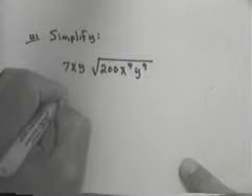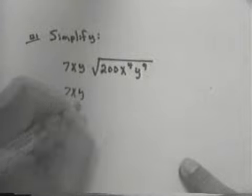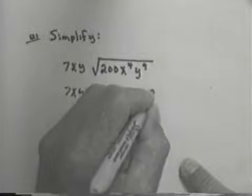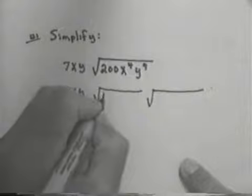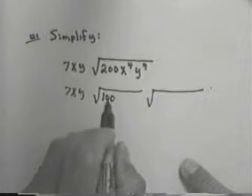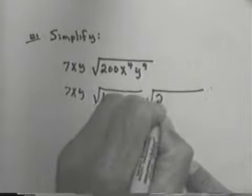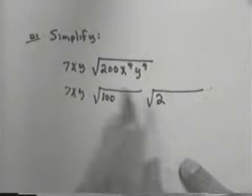I just leave the 7xy. Now factor it into what is a perfect square and what's left. 200 is not, but 100 is. 100 times 2 is 200. So that's how I get to 200.